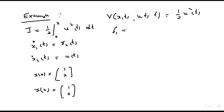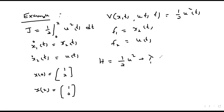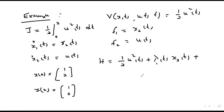Our f1 is x2(t) and f2 is u(t), from which we formulate the Hamiltonian H equal to one-half u-squared plus lambda-1(t) multiplied by x2(t) plus lambda-2(t) multiplied by u(t).